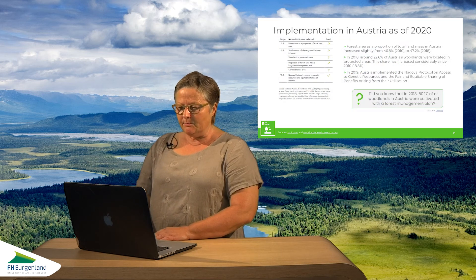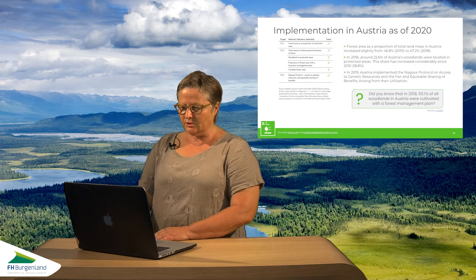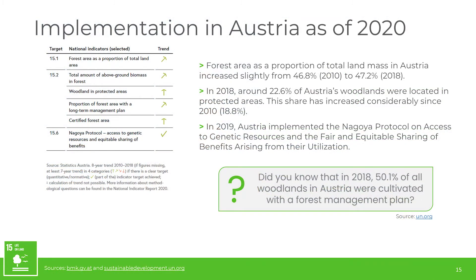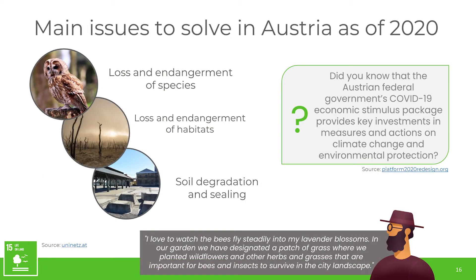When we look at the implementation for the targets in Austria as of 2020, we can see that we're well on the way for making the appropriate contributions. But there are still some main issues to solve in Austria — for instance, loss and endangerment of species, loss and endangerment of habitats, and soil degradation and soil sealing. Austria is notably challenged by soil sealing.